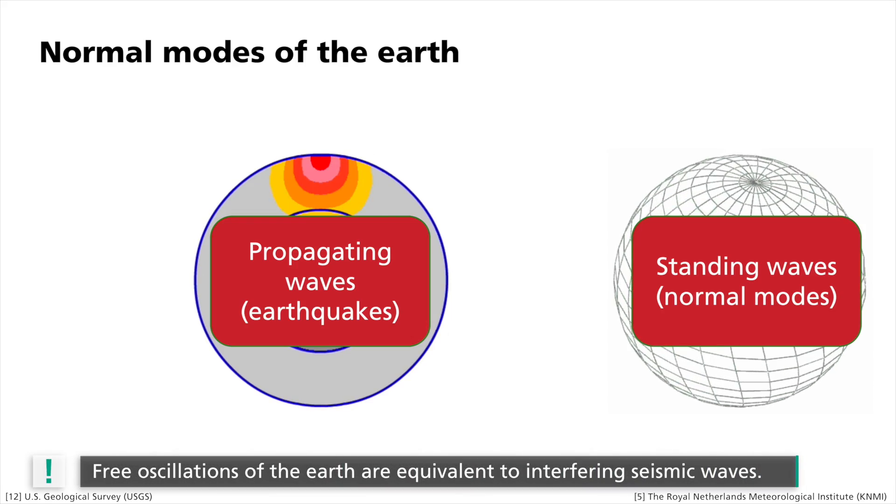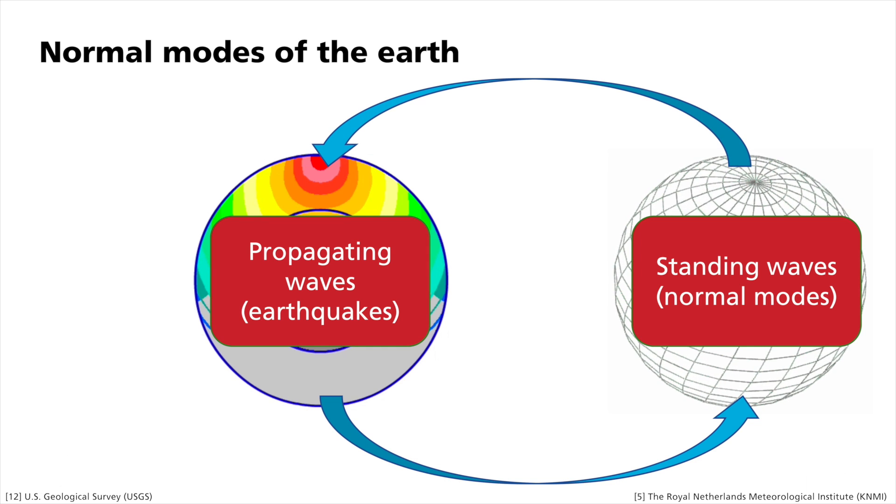At the beginning, I introduced the earth's free oscillations as interfering seismic waves. But conversely, waves can also be described and calculated as the sum of various normal modes. Hence, the same physical phenomenon can be expressed using different mathematical formulas. This shows the equivalence of standing waves and traveling waves.